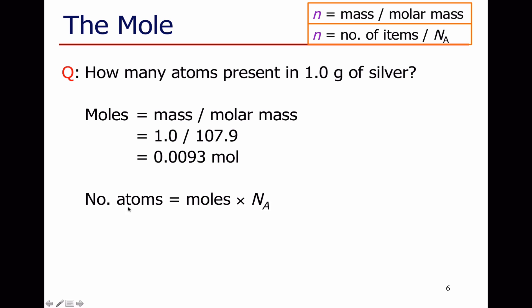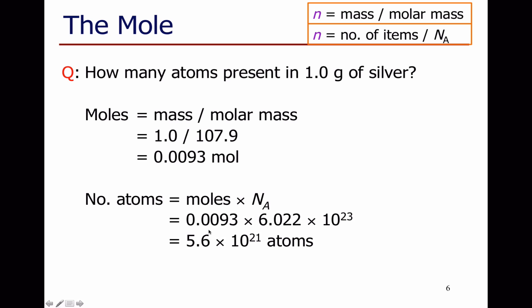Now, if I want to work out the number of atoms, I'll work out how many moles I've got multiplied by Avogadro's number. I've just worked out that I've got 0.0093 moles. Avogadro's number is 6.02 times 10 to the 23. So I've got this huge number of atoms — 5.6 times 10 to the 21 atoms of silver.